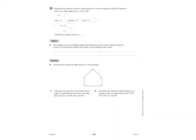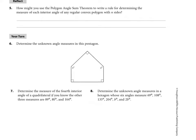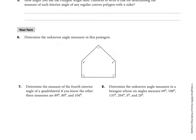So look at the next page 316, number 6, determine the unknown angle measures in this pentagon. Well, how many sides are there? There's 1, 2, 3, 4, 5 sides. So I'm going to say n equals 5. And I know all of these need to add up, or will add up to 180 times 5 minus 2. So 180 times 5 minus 2 would be 180 times 3, which is 540 degrees.